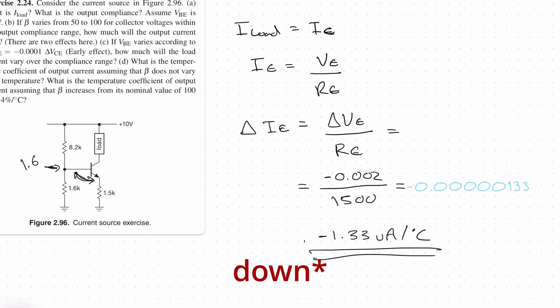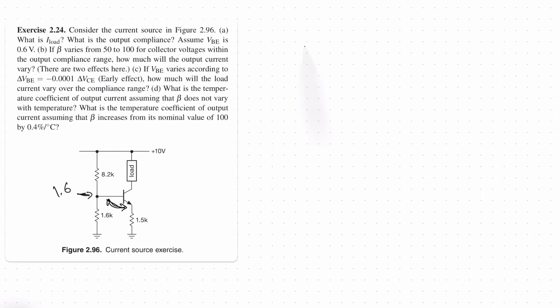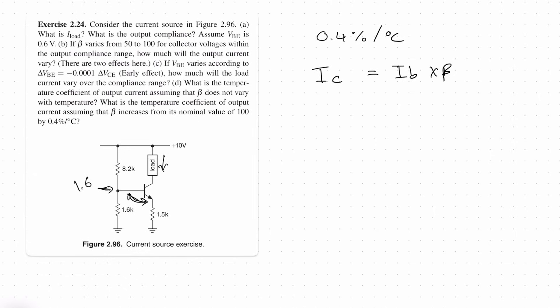Now for the second part, let's consider the case where beta itself is temperature dependent. We are told that beta increases from its nominal value of 100 by 0.4% per degree C. So the temperature coefficient of beta is 0.4% per degree C. Your collector current IC is equal to IB times beta. So if beta increases with temperature and the base current stays the same, then the current through the load would also increase proportionally. So the temperature coefficient on the output current from the beta variation with temperature is going to be 0.4% per degree C due to this relationship, if we assume that IB remains fixed.